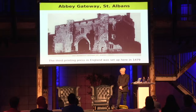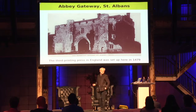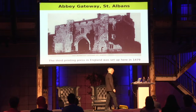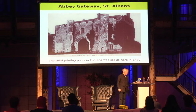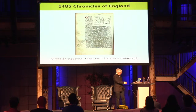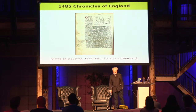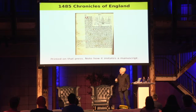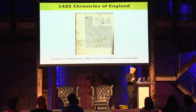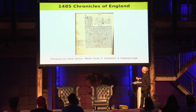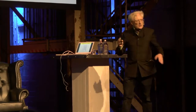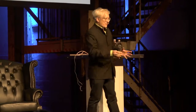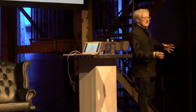But if we look at that school building — this is where the third printing press in England was set up in 1479. And here is one page from one of the books printed there in 1485, the Chronicles of England. It's interesting to look at this because it looks like a manuscript, like it's been made by hand. The reason is because books were replacing something that already existed — manuscripts — and there was a market for manuscripts.